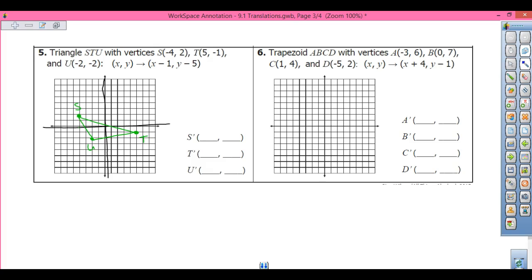Alright, so what am I doing with all my x's? With all my x's I'm going to subtract 1. With all my y's I'm going to subtract 5. So for S, if I subtract 1 I get -5, and my y I get -3. For my T, for my x I get -3 and my y I get 0. And for my U, my x is 2 and my y is -2.